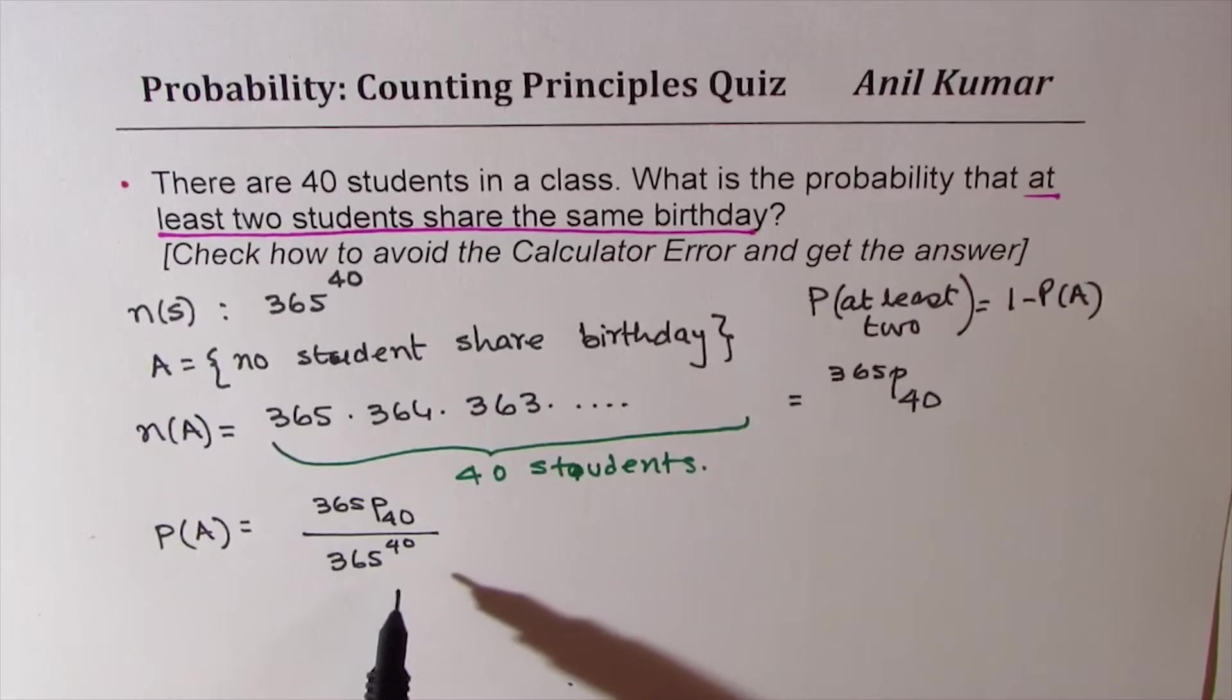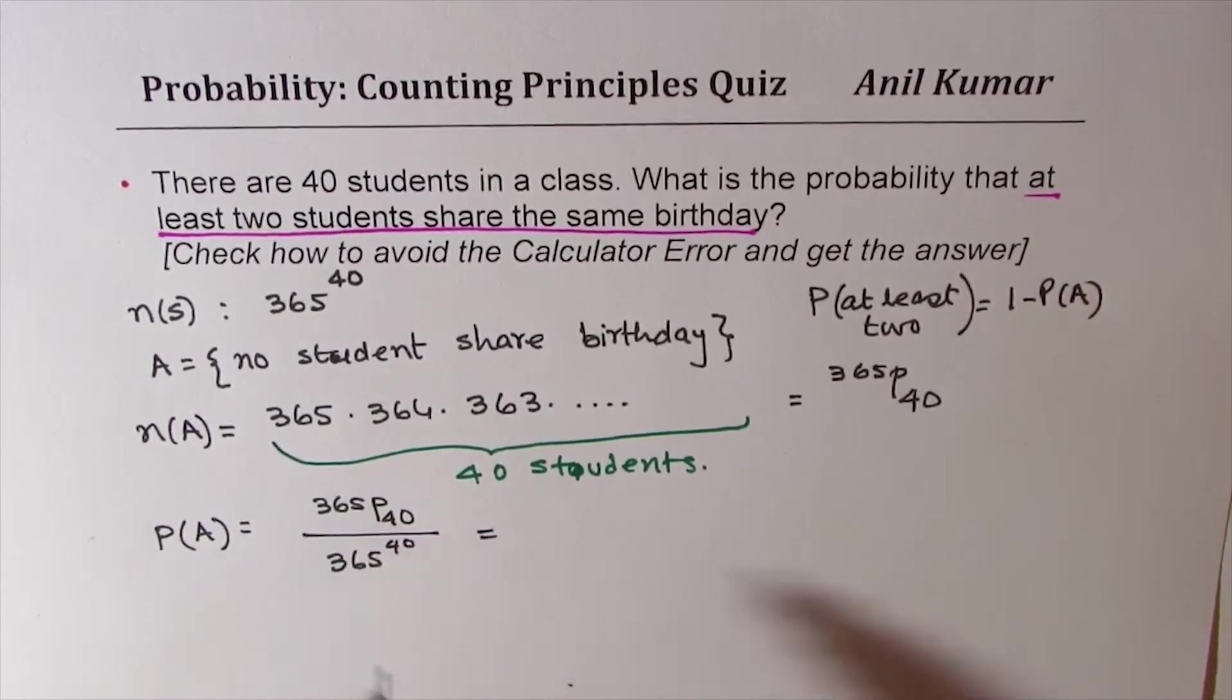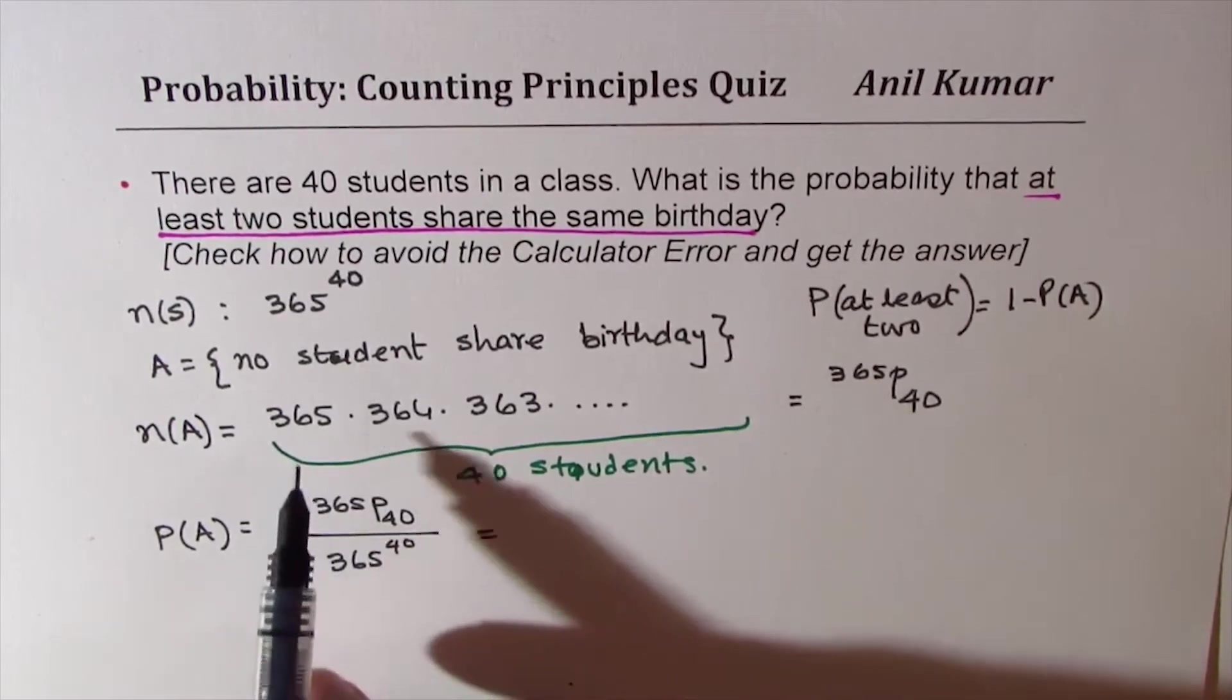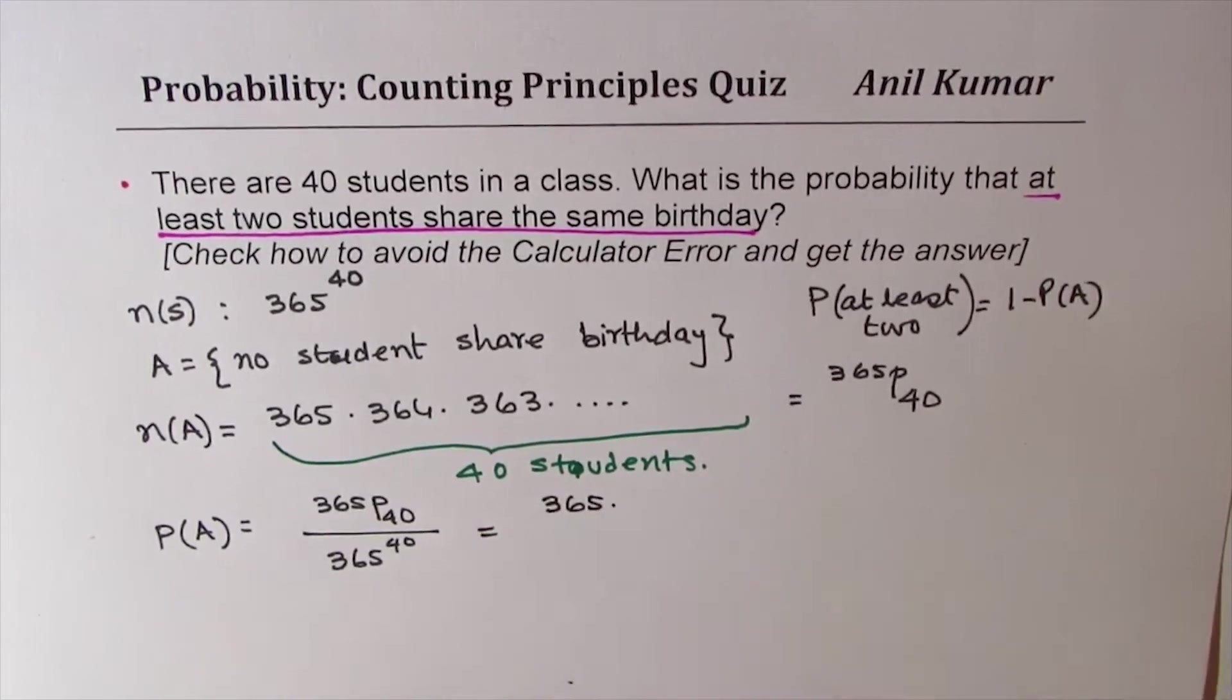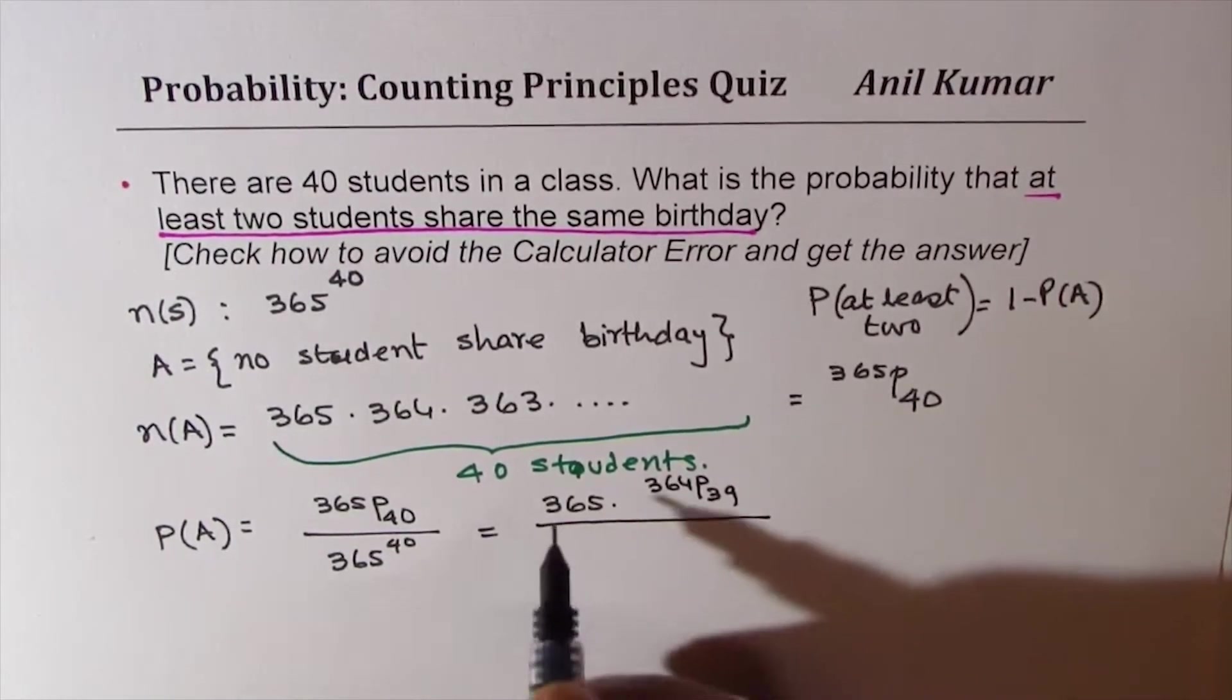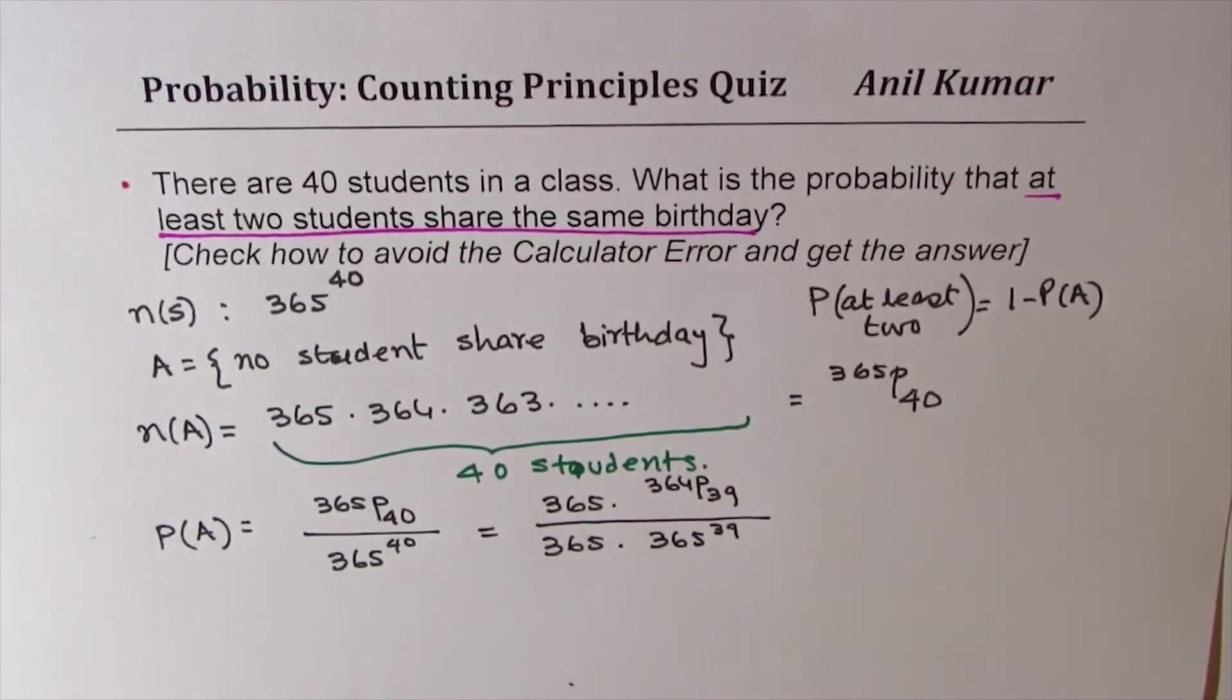So we are left with simplifying this portion. What you realize is that this could be written as, you know, this number 365 and 365, both are in the denominator. So think like this, I could write this as 365 times, now we are left with 364P39. So I've already taken one here. And in the denominator, I could write this as 365 times 365 to the power of 39. Does it make sense to you? Now this is a key step.